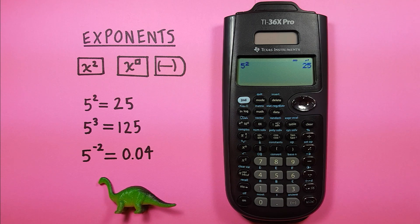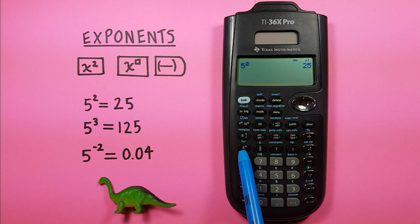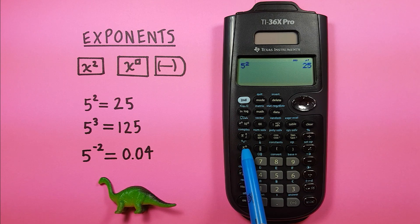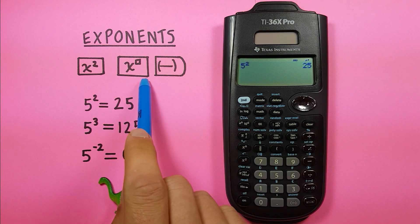If we want to find an exponent that isn't a 2, we can use the x box, x power, or x exponent key. The one that looks like this, that's this one right here.